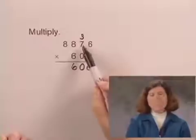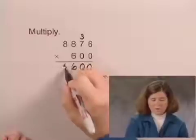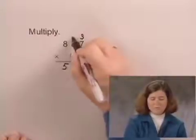Multiplying 6 times 7, we have 42. 42 plus 3 is 45. Writing the 5 below and the 4 above the 8.